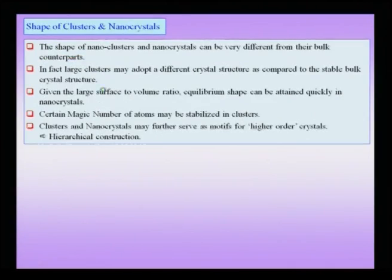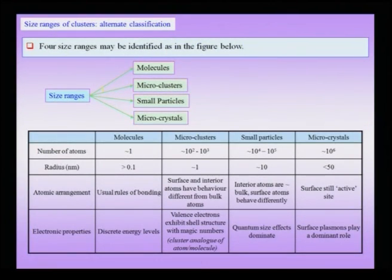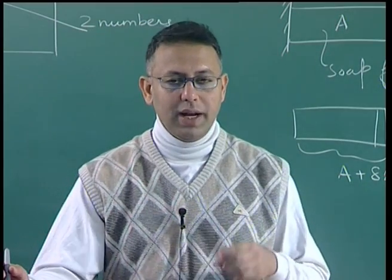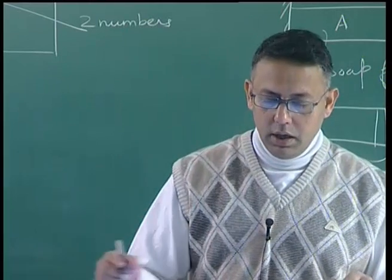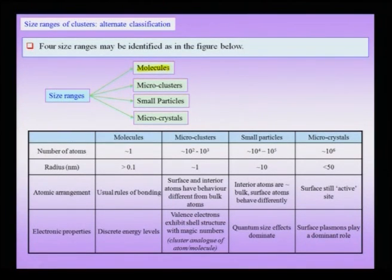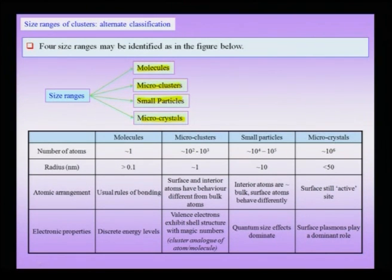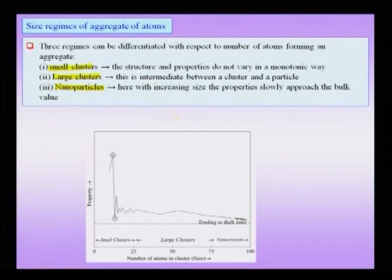In literature you would find not only the classification just mentioned, but also other size regimes such as molecules, micro clusters, small particles, and micro crystals. Some of the regimes and property-based definitions would tend to overlap, but depending on the literature and the specific properties being considered, one of these classifications may be used by an author to describe what you might call a cluster of atoms.